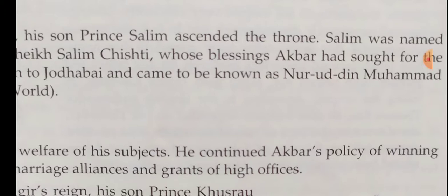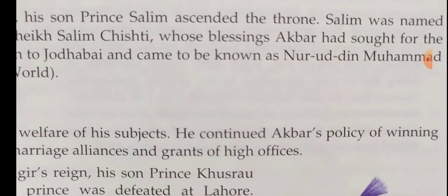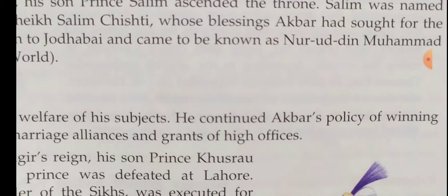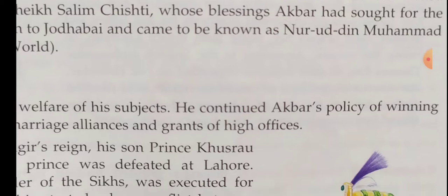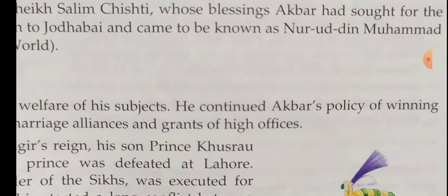During Jahangir's reign, the Deccan remained a source of trouble for the Mughals. When the Persians attacked Kandahar, Jahangir ordered his son Prince Khurram to defend it, but Khurram refused to fight the Persians. The loss of Kandahar was a serious blow to the Mughals, as it was also a recruiting ground for Central Asian troops for the Mughal Army.